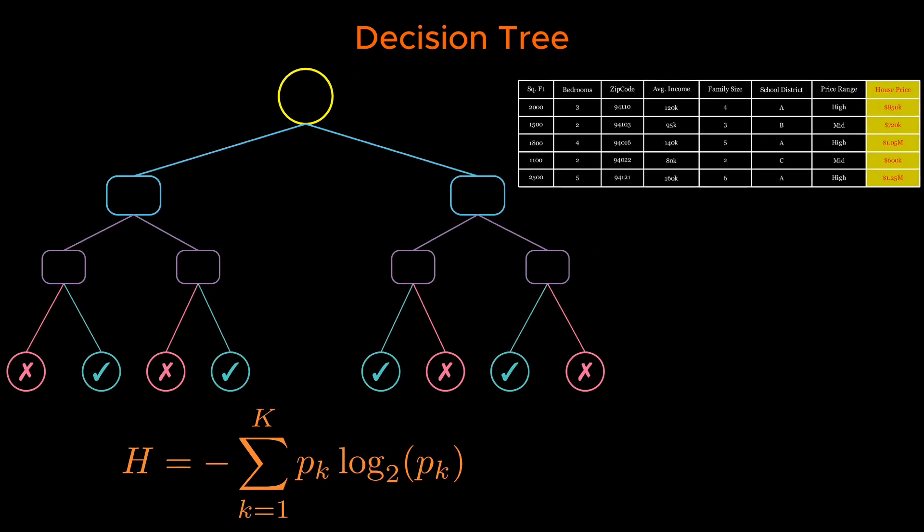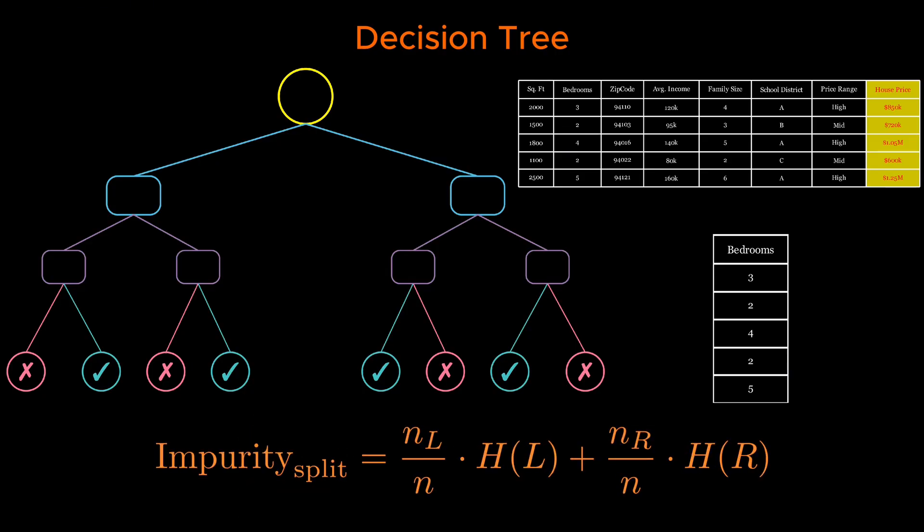A decision tree begins with all data in the root node. It tests each feature column in the dataset. For each feature, it looks at all its unique values in that column. For each unique value, it splits the dataset into two groups of nodes: those with feature values less than the unique value, and those with feature values greater. We simply call these two groups the left and right nodes. For each split, we compute the entropy of the left node and the entropy of the right node using the same equation as before. The only difference is, each node now has fewer data samples. So probabilities are different. Then we combine them using a weighted sum based on the number of samples in each node. This weighted sum will be called impurity. It is represented by the following equation.